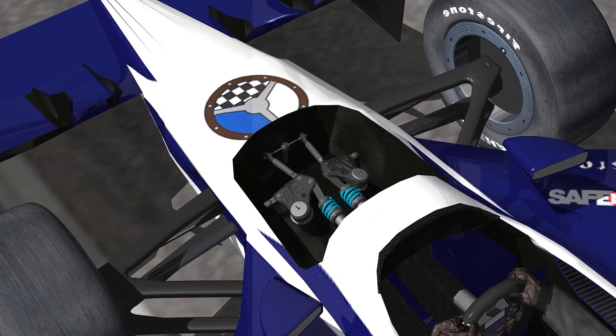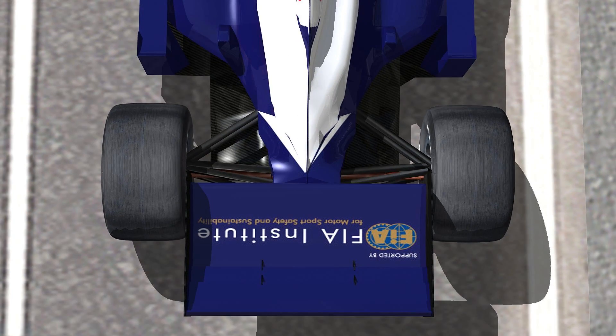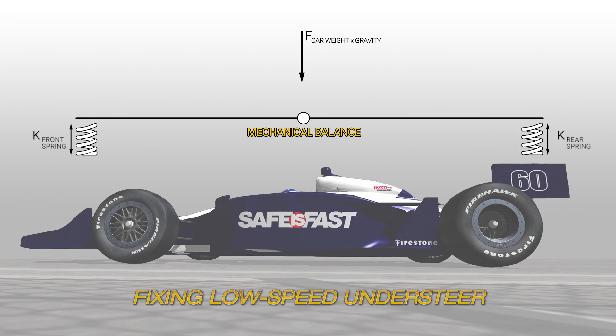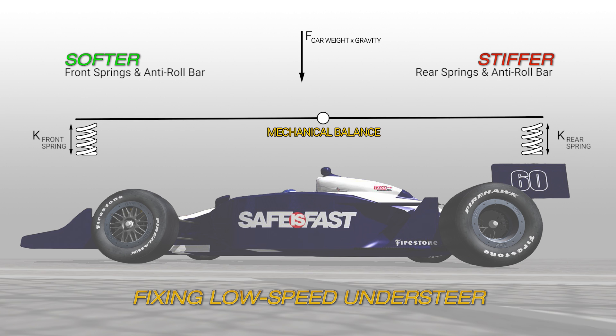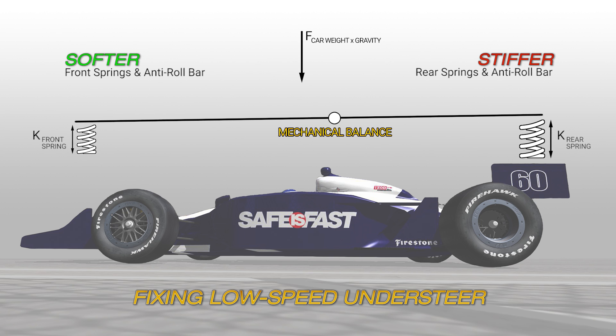If you have a mechanical balance issue, you're going to go after springs and bars and alignment — the mechanical parts of the car. If it's understeering, you're doing too much work on the front axle, so we've got to move some of that work to the rear axle. Typically we do that by moving the mechanical balance rearward — adding rear bar, softening the front bar, adding rear spring, softening the front spring — so the rear tires do more work and the fronts do a little less.